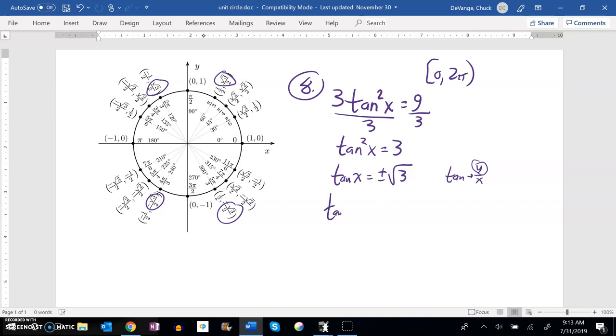So it looks then that tangent could be π over 3, 2π over 3, 4π over 3 and 5π over 3.